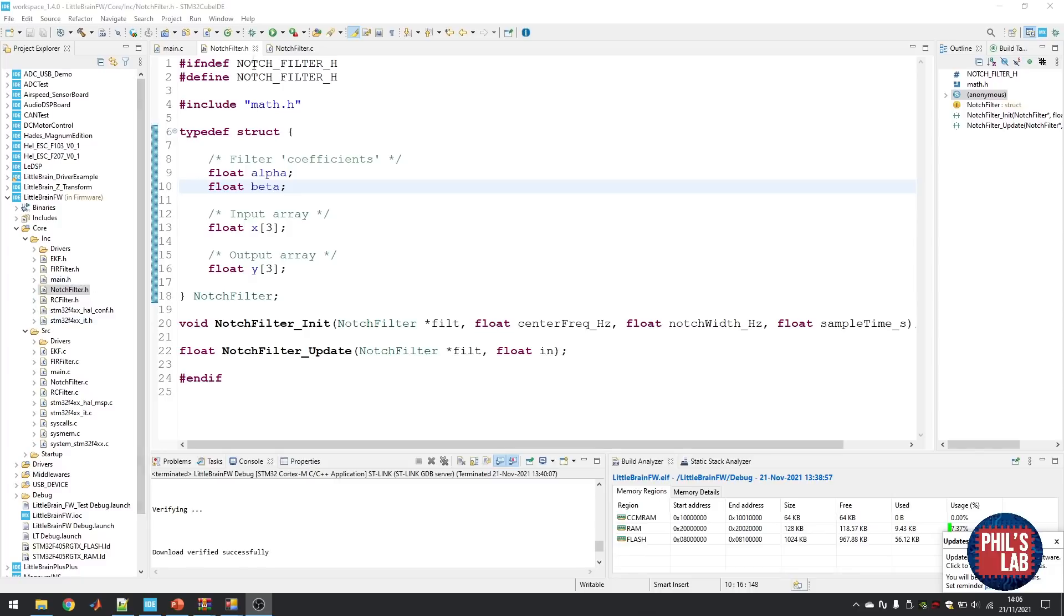Our notch filter will simply be making a header file and an accompanying source file, which we can then include in our main.c file. Bear in mind that this is a very crude implementation of this filter, and there's many optimizations you can do to get this running more elegantly, faster, and so forth. But for the purposes of demonstration, this is absolutely fine.